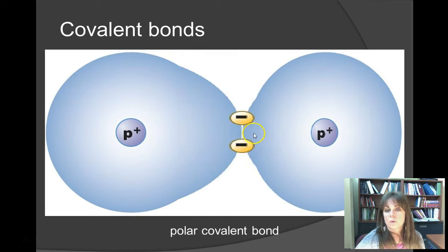But when one atom hogs the electrons, the sharing is unequal. It is called a polar covalent bond.